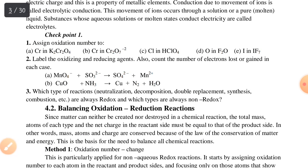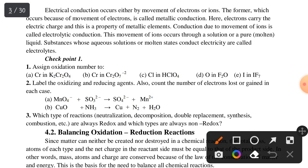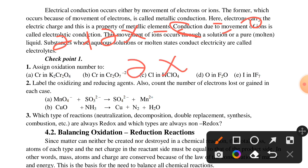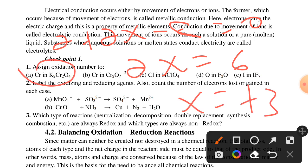For the compound K2CrO4: potassium is +1, so plus 1 times 2 equals positive 2. For chromium, let oxidation number equal x; oxygen is minus 2, minus 2 times 4 equals minus 8. So 2 plus 2x minus 8 equals 0, giving 2x equals 6, therefore x equals plus 3. Chromium has a +3 oxidation state in this compound.